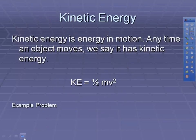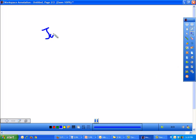The first thing we're going to discuss is kinetic energy. Kinetic energy is energy in motion, so any time an object moves it's going to have kinetic energy. Kinetic energy depends on the object's mass and on the object's velocity — the faster it goes and the larger it is, the more kinetic energy it has. Kinetic energy is a form of energy measured in joules; all energy is measured in joules.